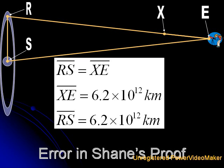Because we know that RS must equal XE, and because we know that XE is known, this means we cannot, I repeat, cannot arbitrarily increase the size of RS. This is the key concept in understanding what is wrong with Shane's proof.